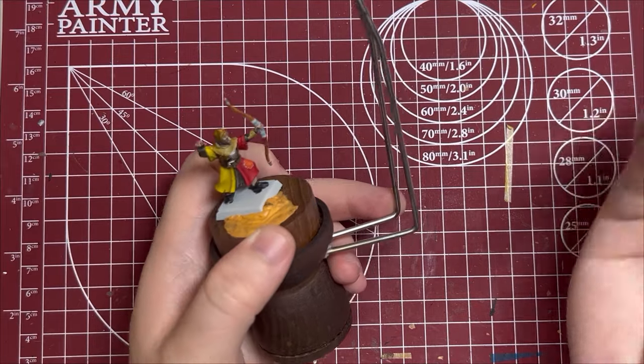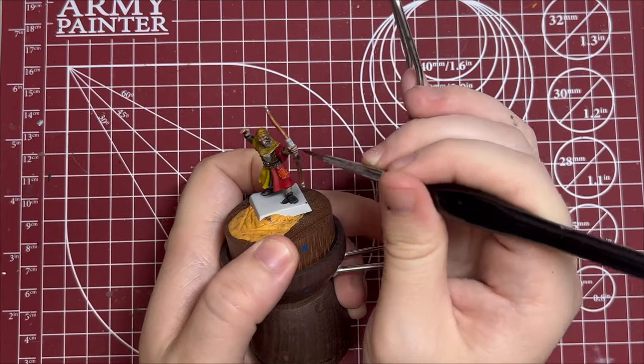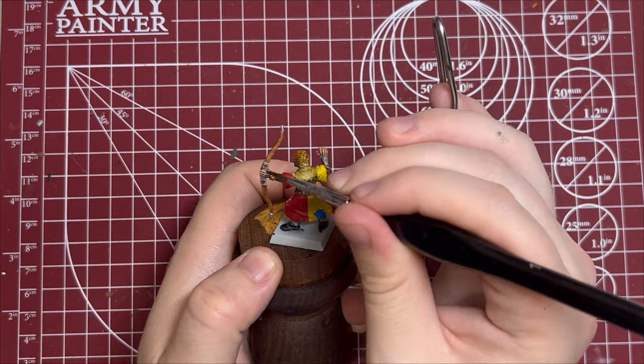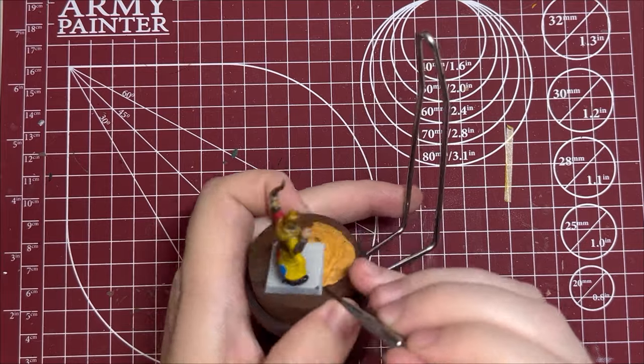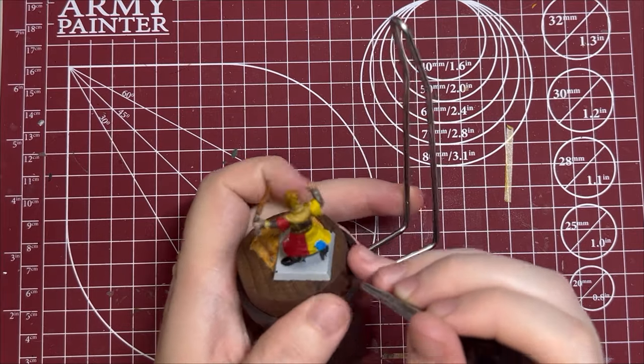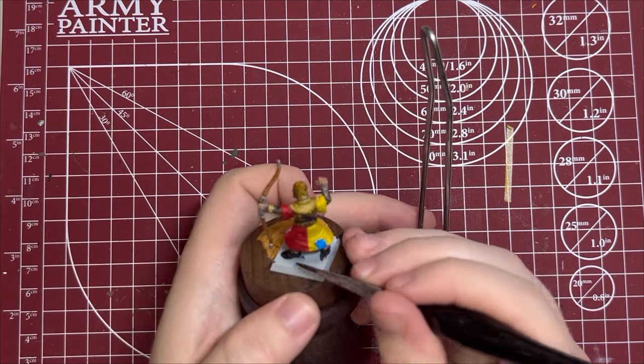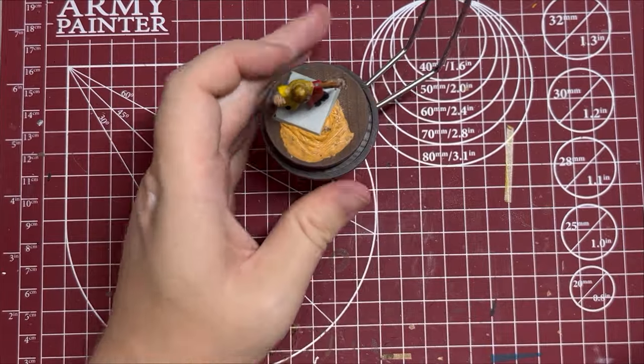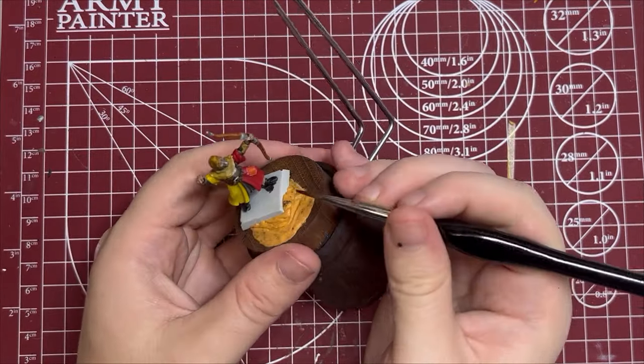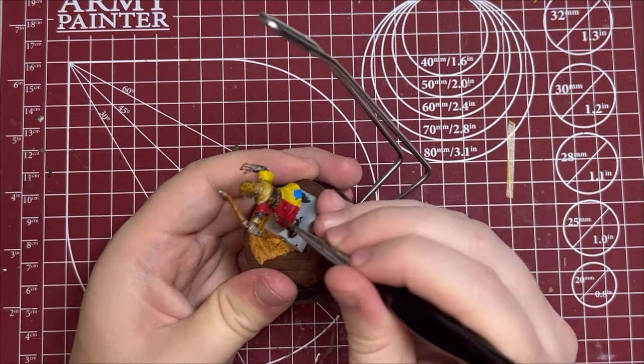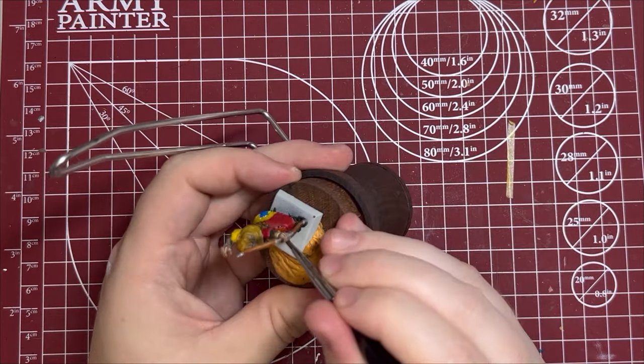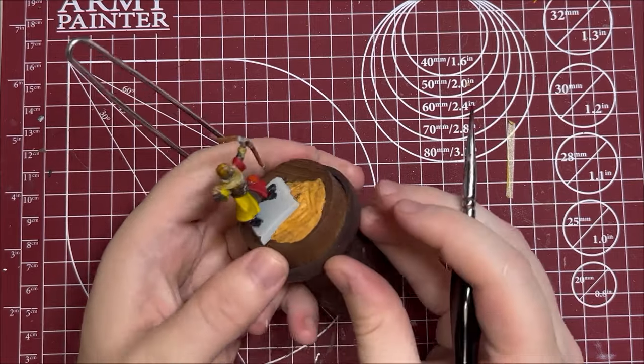Now I'm just going to use some washes for some liquid talent. I'm going to take some Agrax Earthshade, which is a brown wash. I'm going to dirty up his handle here. Now we're going to take some Seraphim Sepia. And we're just going to paint up right around these patches.